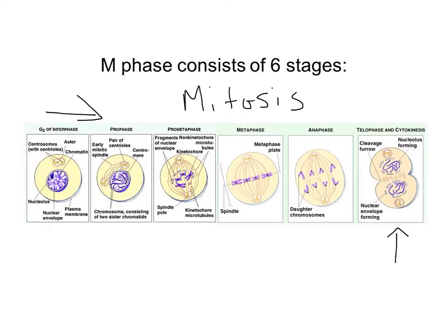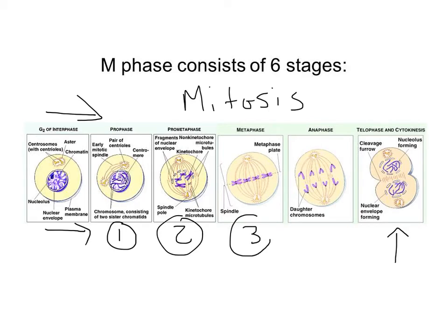A cell will go through all the specific phases of the cell cycle — interphase (G1, S, G2) — and then enter the first phase of mitosis. The first phase of mitosis is called prophase. The second phase is prometaphase. The third phase is metaphase. The fourth phase is anaphase. The fifth phase is telophase, and that will be followed by cytokinesis.